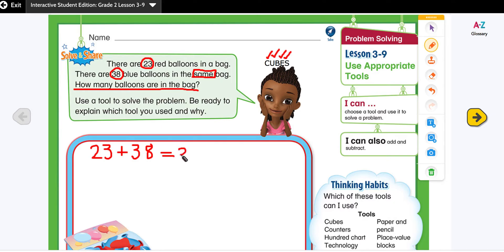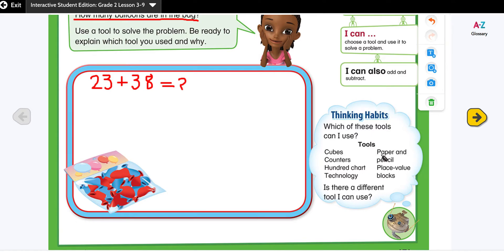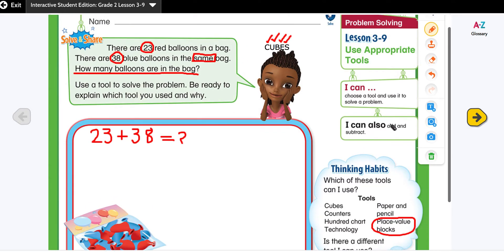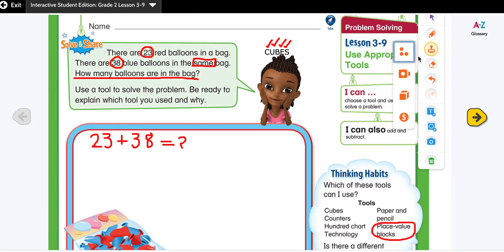There are different tools given here that we can use. We can use cubes, counters, a hundred chart, technology, paper and pencil, or place value blocks. First I'm going to show you how you can use the place value blocks. We're going to go to our manipulator bar and grab our place value blocks from here.